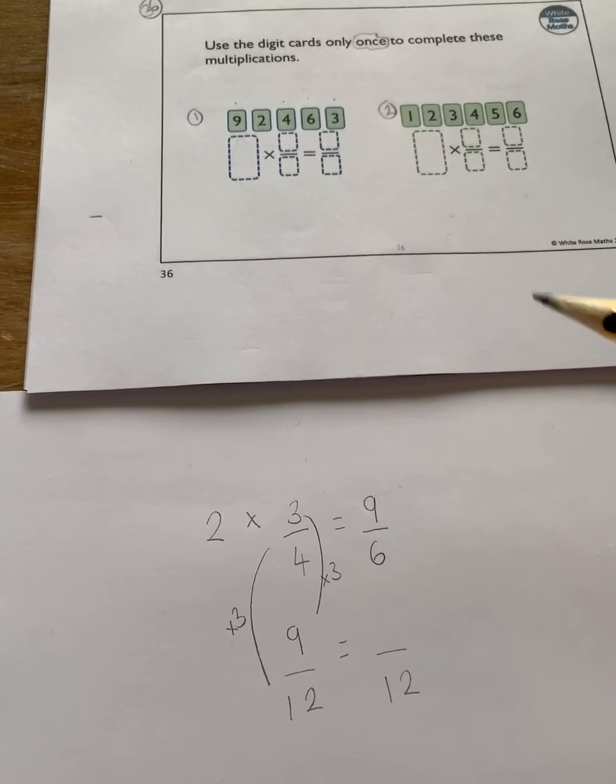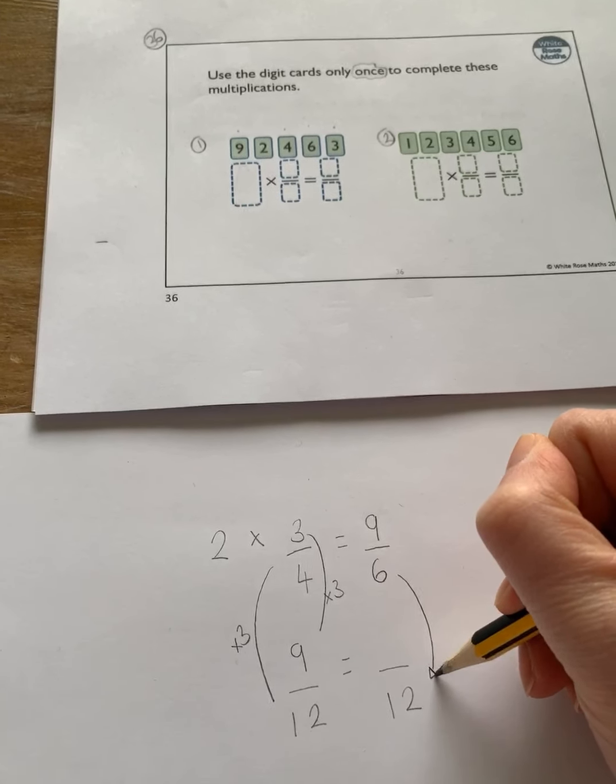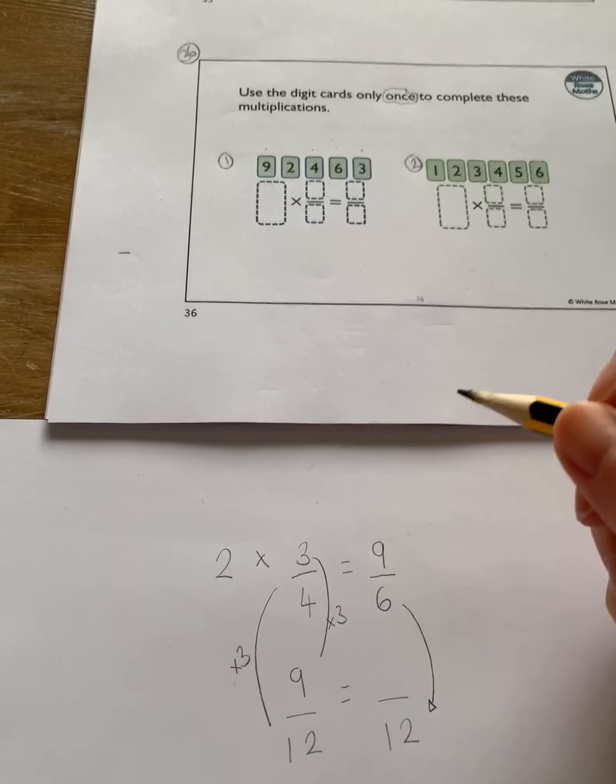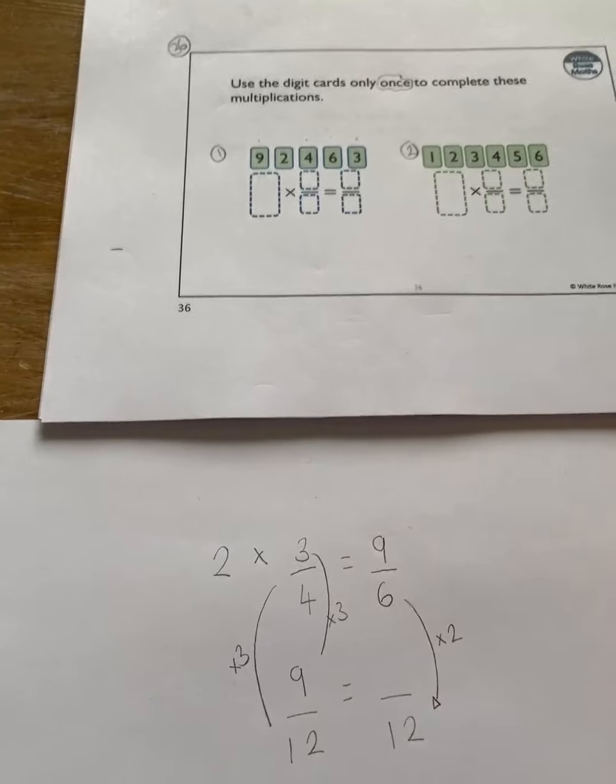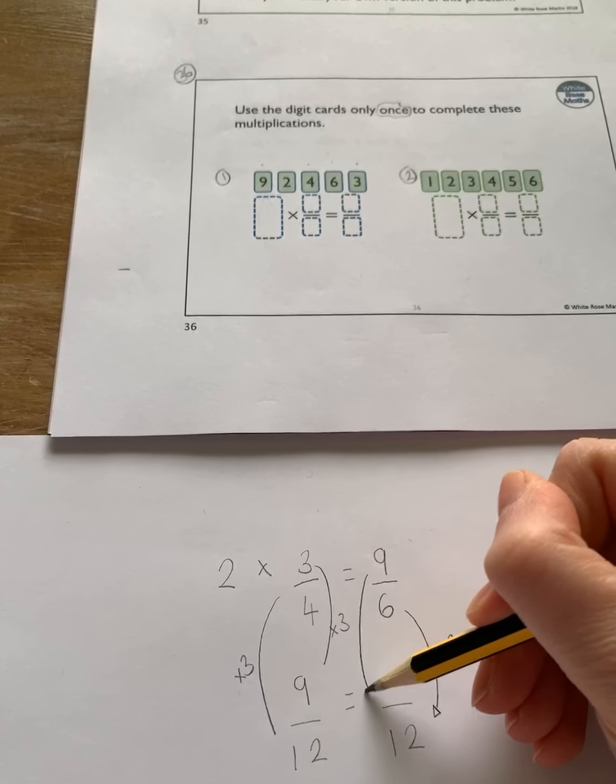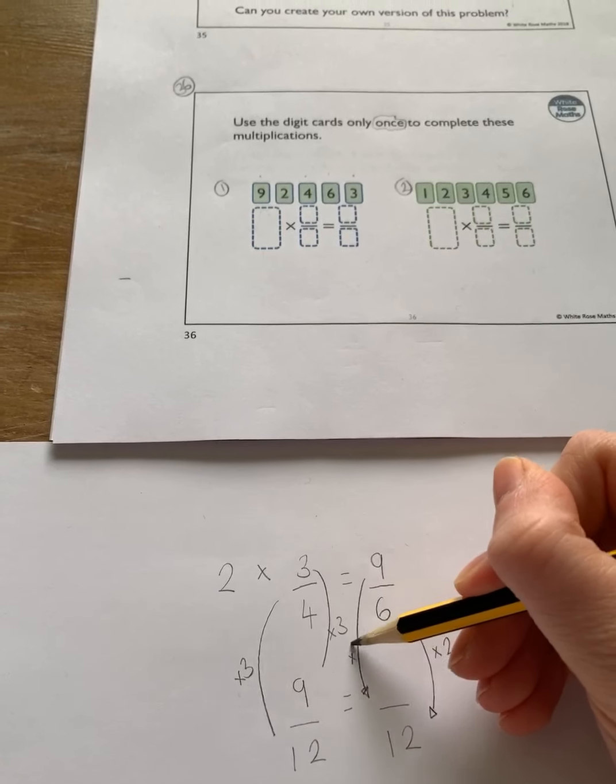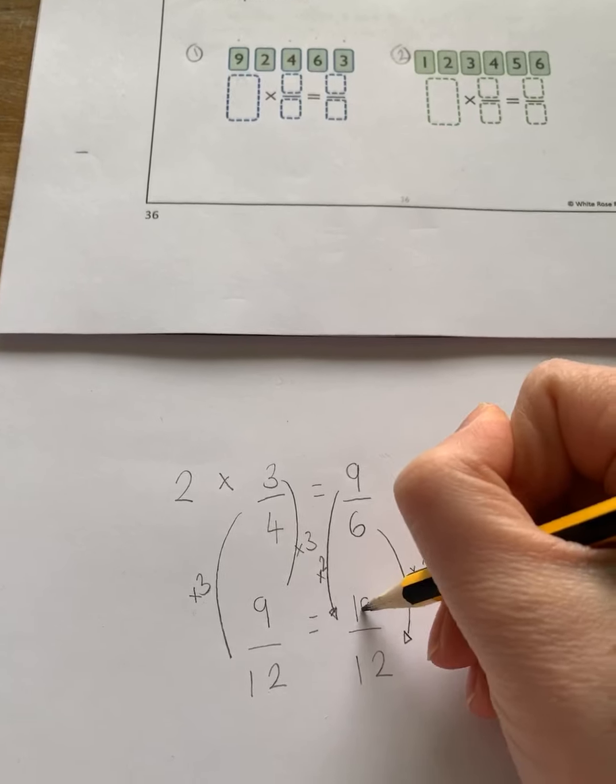Then if I do the same here whatever I do to my denominator I do to my numerator as well so I times up by two because six times two is twelve and I do the same to my numerator and I times up by two as well hopefully you can see that nine times two would be eighteen.